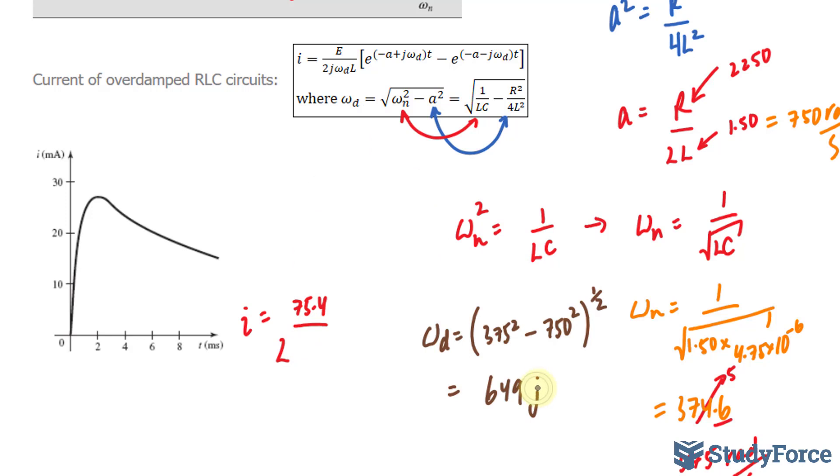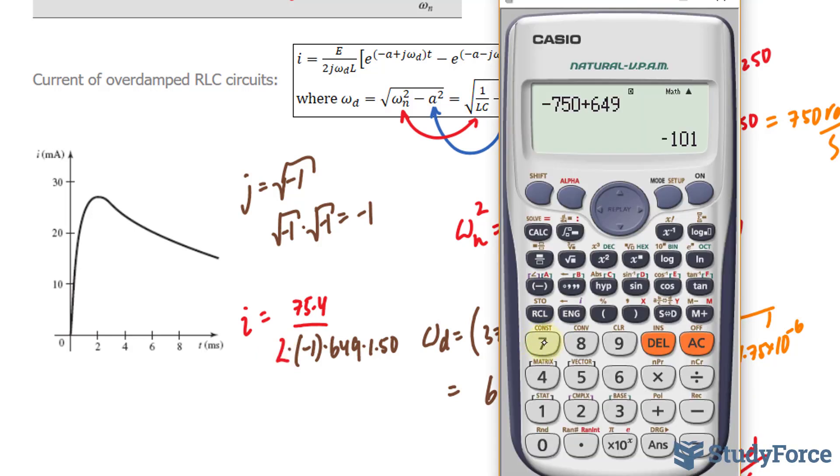So, I have j times j, and if you recall, j is equal to the square root of negative 1. If I multiply the square root of negative 1 twice, I'll end up with simply negative 1, the radicand. So, I have 2 times negative 1, times 649, times my inductance, which is 1.50 henries. All 4 of these factors are being multiplied. So, let's go ahead and find out what that is. 75.4 divided by 2 times negative 1, times 649, times 1.50.